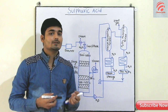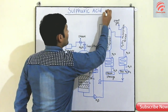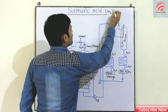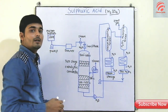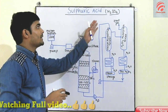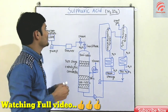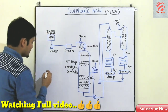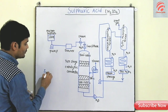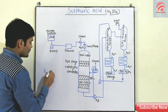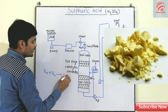This is the basic formula of H2SO4 — this is the sulfuric acid formula, H2SO4.